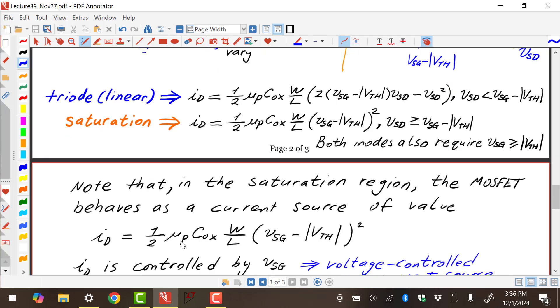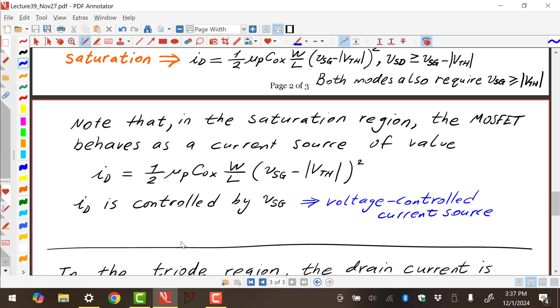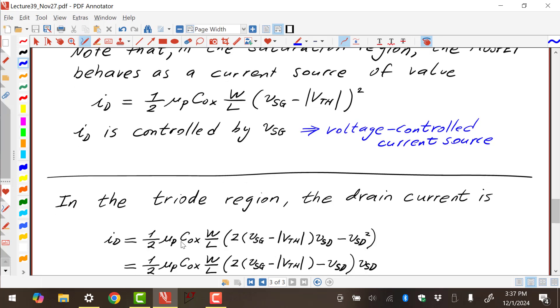Let's move on. So as far as saturation region is concerned, here's ID. ID is given by that. It's a voltage control current source. VSG controls ID. And in the triode region, of course, drain current looks like this. So this is directly from the expression that I just showed before.